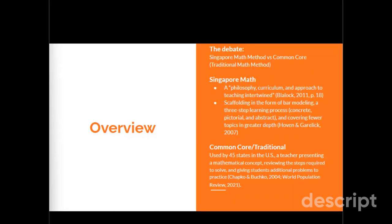To match what the successful kids in my AP Physics class did, I found the Singapore math method, which I think is the closest method to what they were doing, and then I compared it to Common Core, which is taught with the traditional math method. Singapore math is a philosophy, curriculum, and approach to teaching intertwined — it has scaffolding in the form of bar modeling, a three-step learning process, and covering fewer topics in greater depth. Common Core is really just a teacher presenting a mathematical concept, reviewing the steps required to solve it, and giving students additional problems to practice.